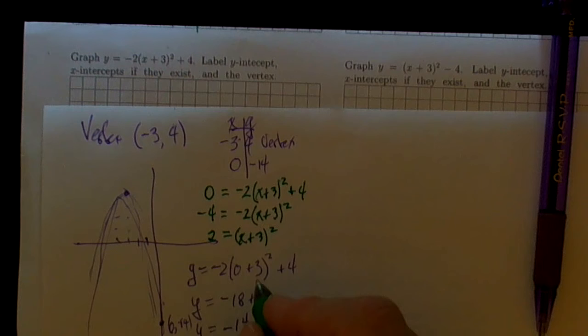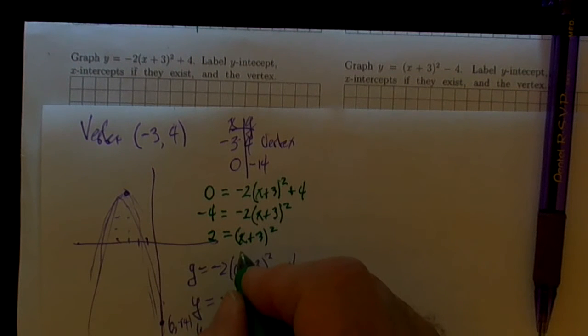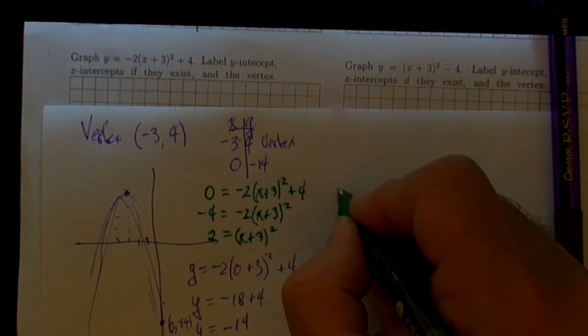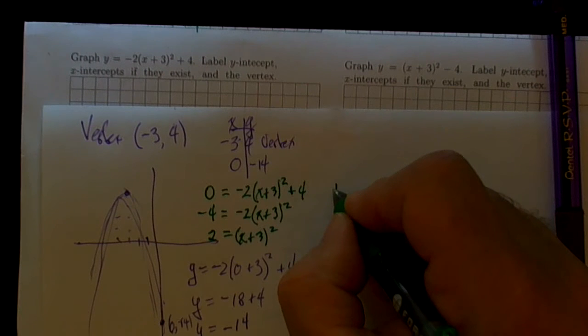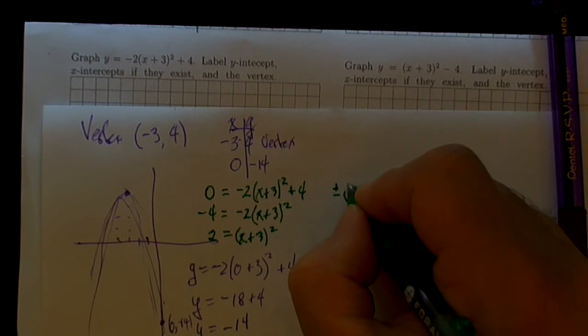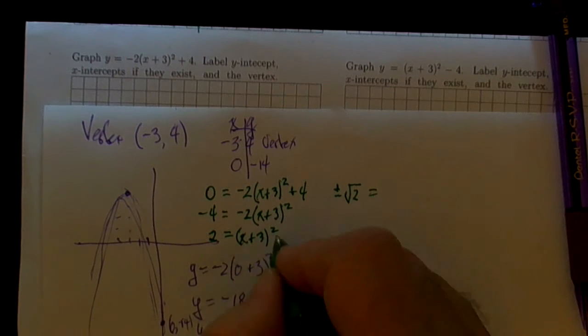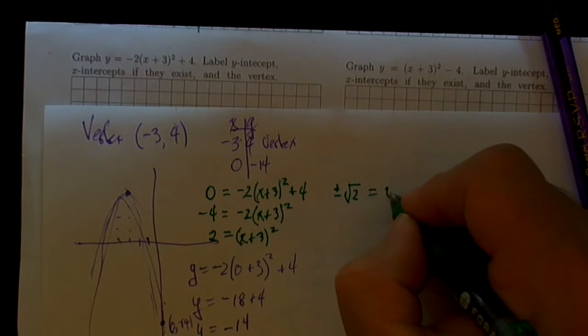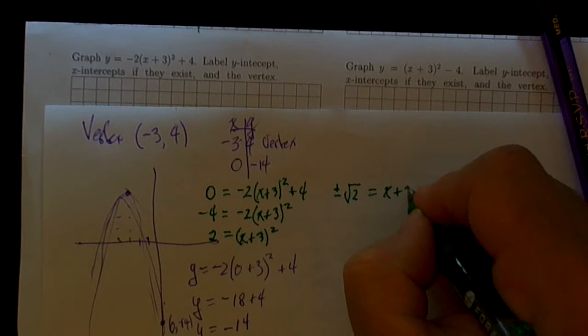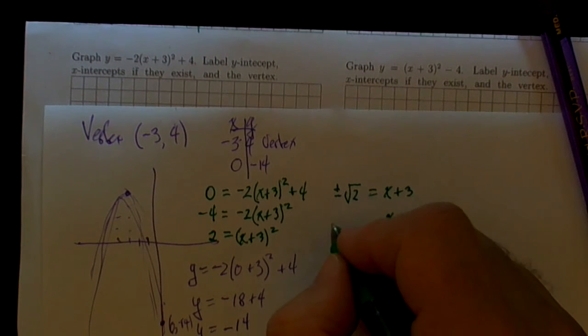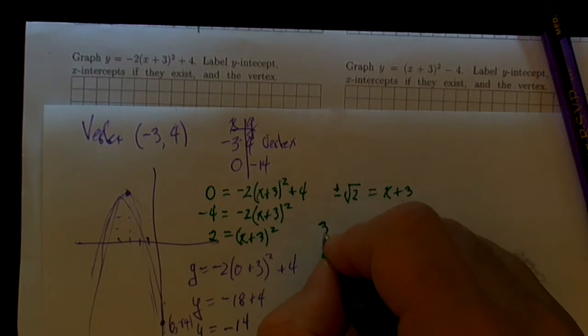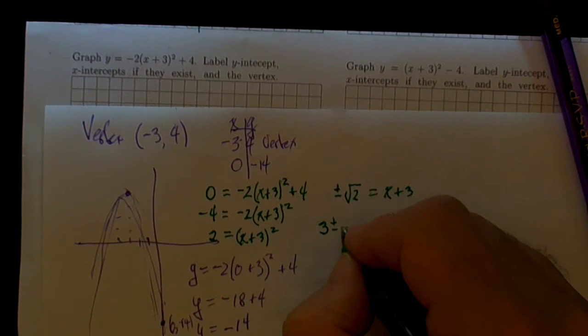Divide both sides by 2, so this is going to be 2 equals x plus 3 quantity squared. Take the square root of both sides, and we get plus or minus the square root of 2 on the left-hand side, and x plus 3 on the right-hand side. So x is going to be equal to negative 3 plus or minus the square root of 2.